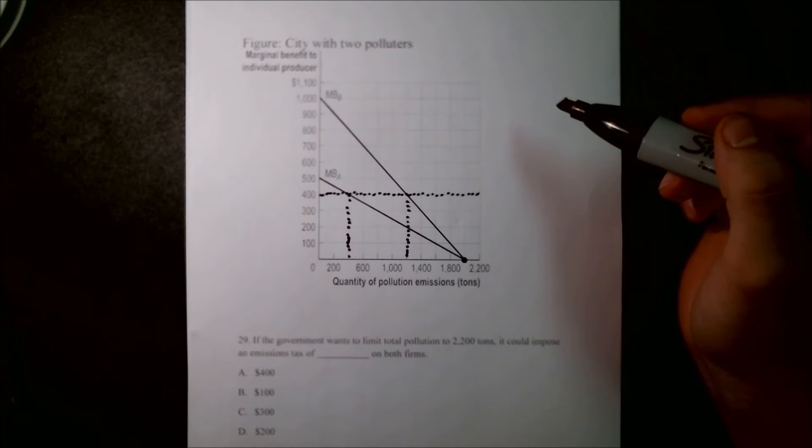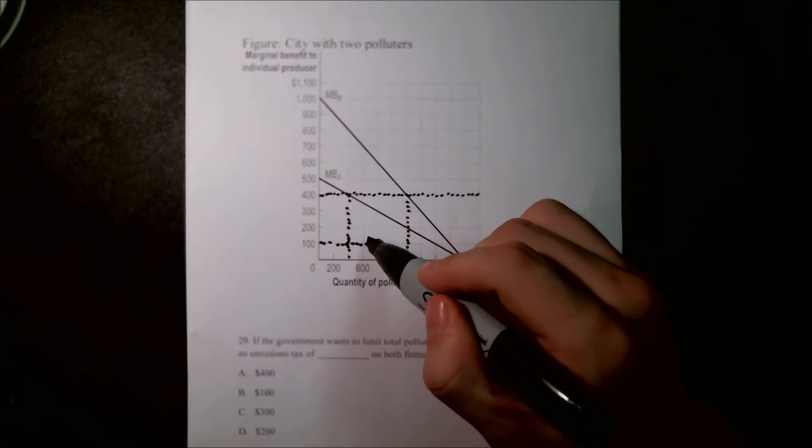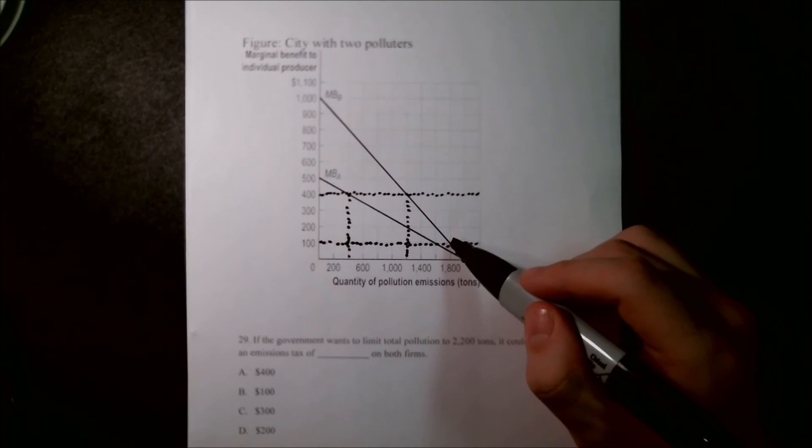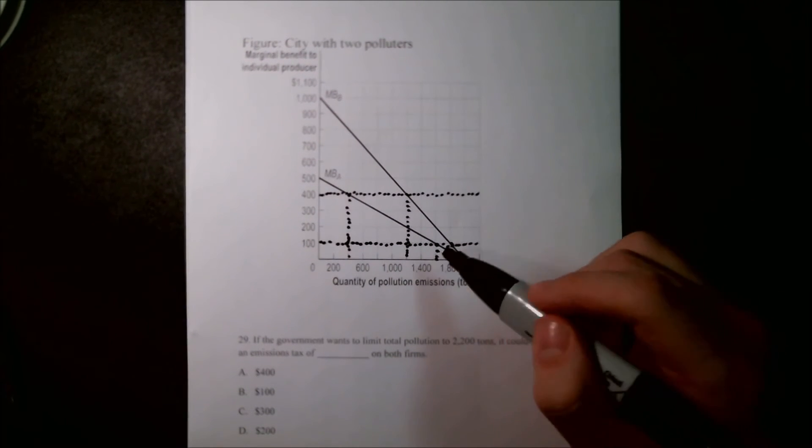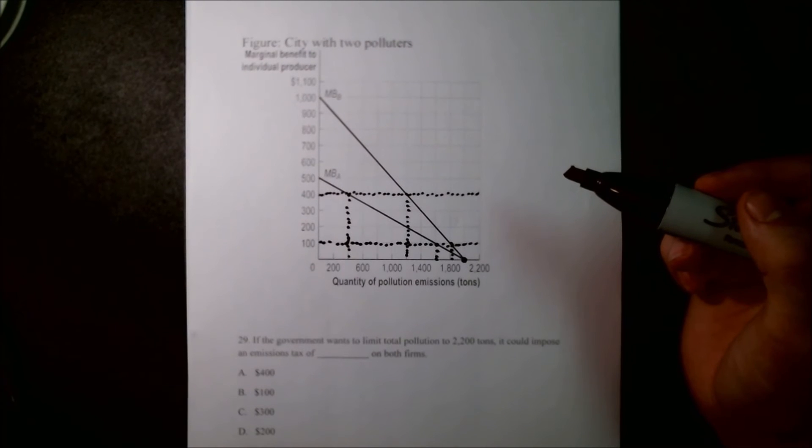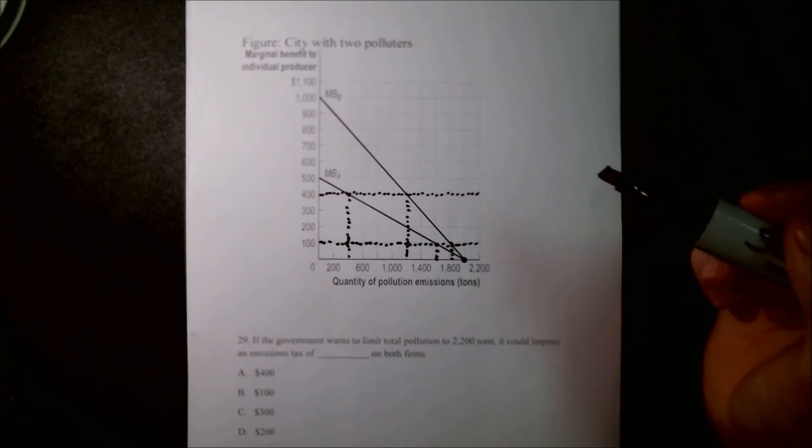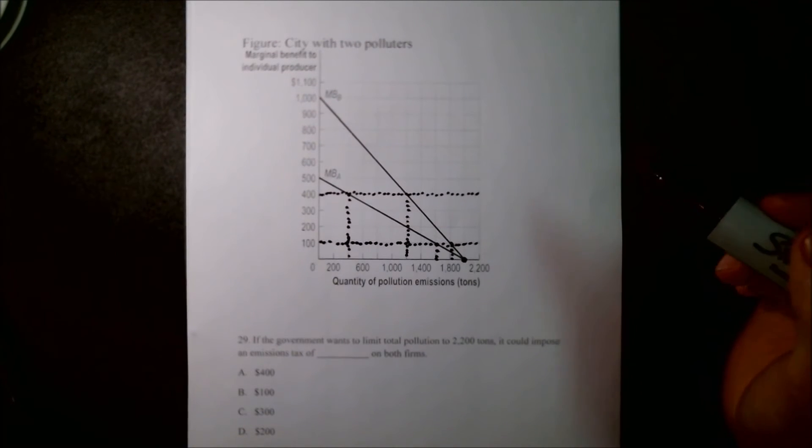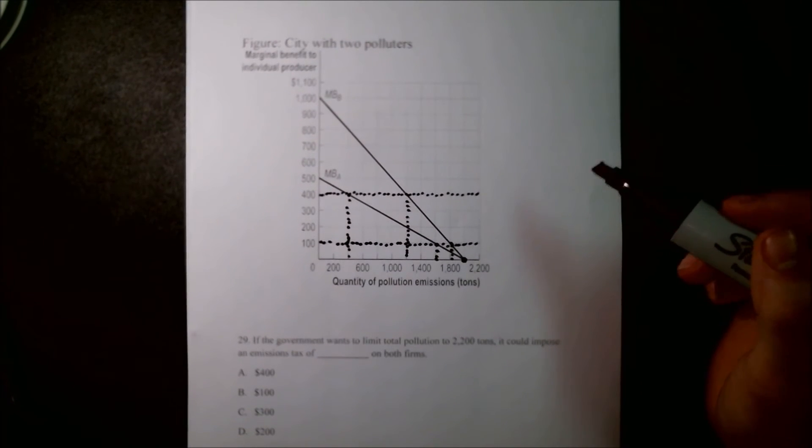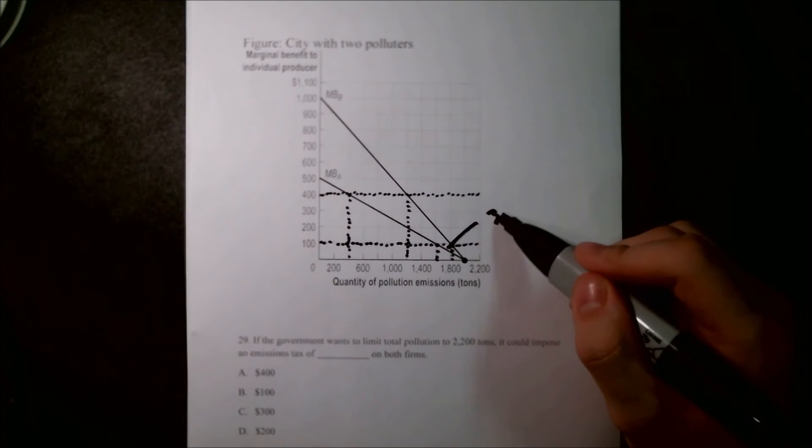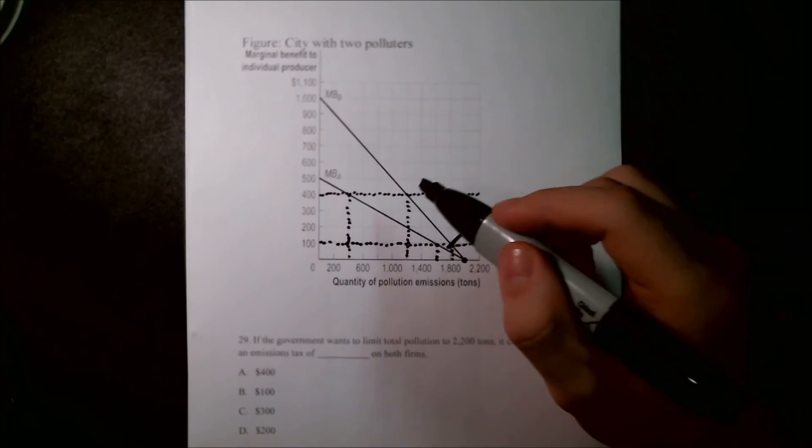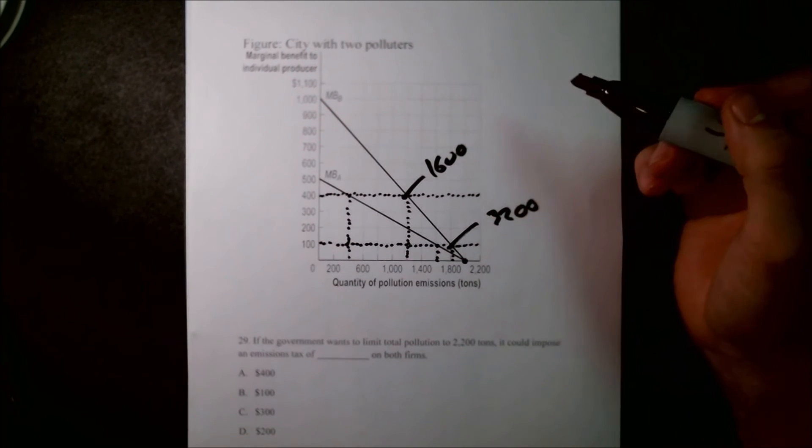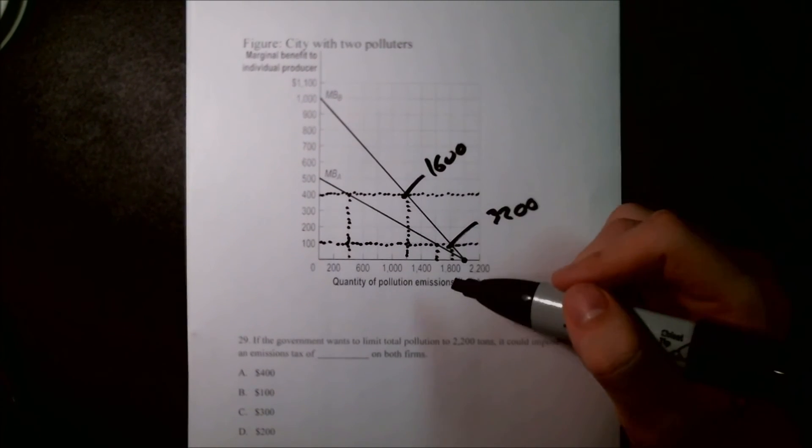So now let's try $100. So we raise the tax up $100. Now each firm is producing at these two points, 1,800 and 1,600. That adds up to a total of 3,200 tons of pollution. So that's not quite going to be correct. We're going to write that in, 3,200. This one is going to be 1,600. So now we know it's going to be somewhere in between these two areas.